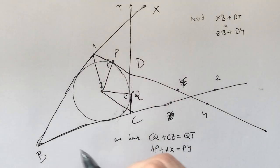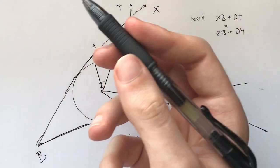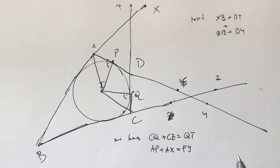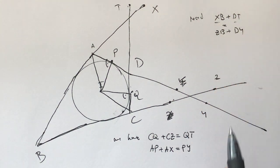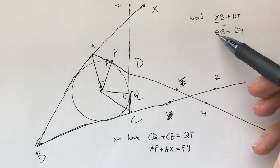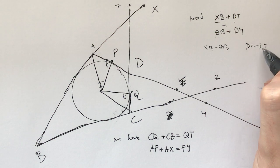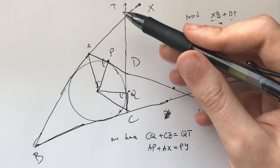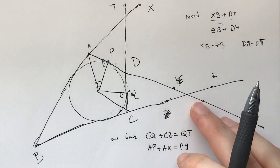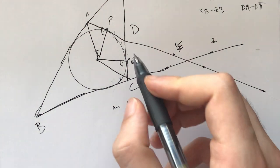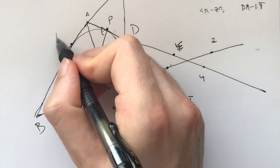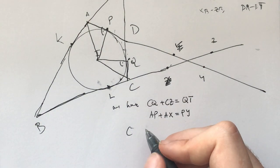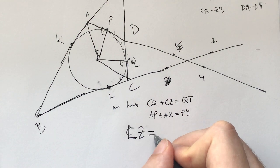So this is the diagram. These are the two perpendiculars, P and Q. And what we have from our little lemma is that CQ plus CZ is equal to QT, and AP plus AX is equal to PY. And now what we need is XB plus DT equals ZB plus DY. Maybe the best way to look at this is in terms of subtractions: XB minus ZB and DT minus DY. And why do I look at it in terms of subtractions? Because I want to subtract this so badly because DQ and DP are identical.